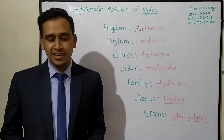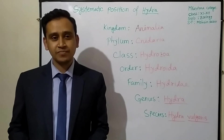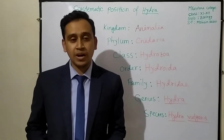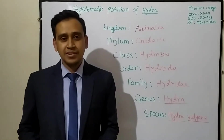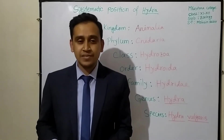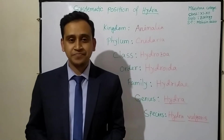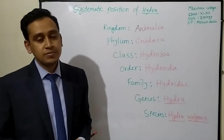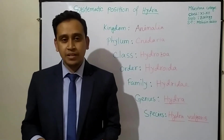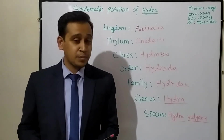Today's first topic is the systematic position of Hydra. First, some basic information about Hydra: Hydra is a freshwater animal. The Swiss scientist Abraham Trembley first discovered the animal Hydra, and the scientist Carolus Linnaeus gave the name Hydra. There are about 40 species found over the world, and among them, three species are available in Bangladesh.